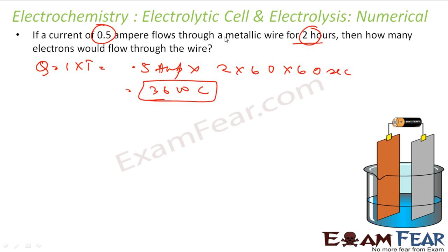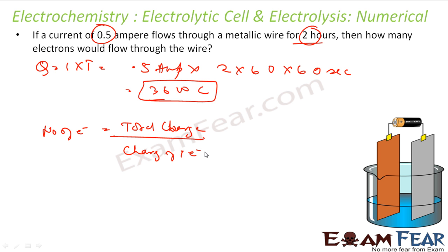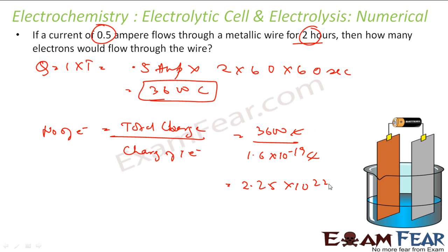Now the question is how many electrons are there in this charge? The number of electrons equals the total charge passed divided by the charge of one electron — that is 3600 coulombs divided by 1.6 × 10⁻¹⁹ coulombs. Solving this gives 2.25 × 10²² electrons. That is the number of electrons that pass through the wire when 0.5 ampere flows for 2 hours.